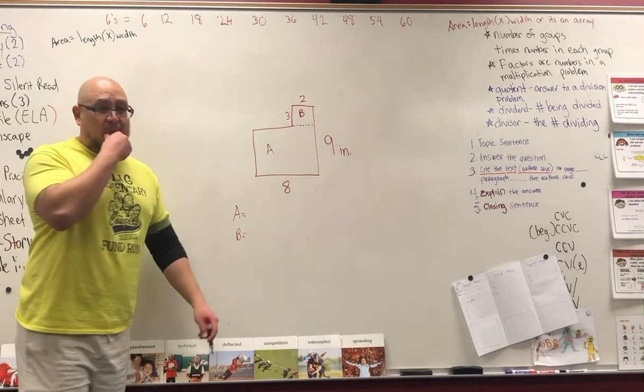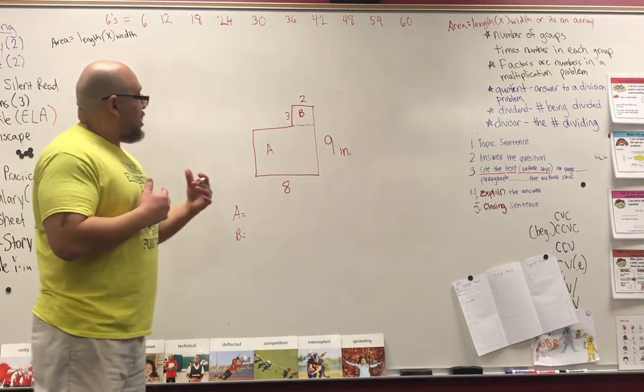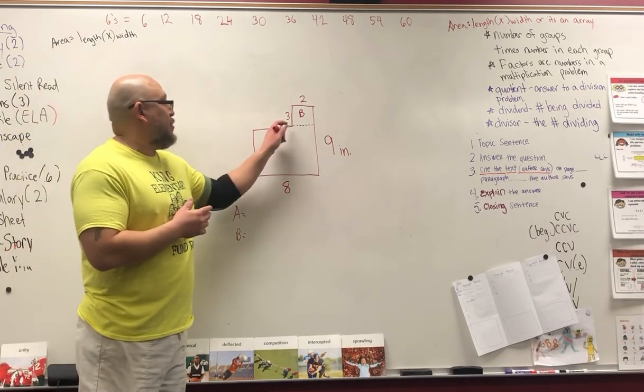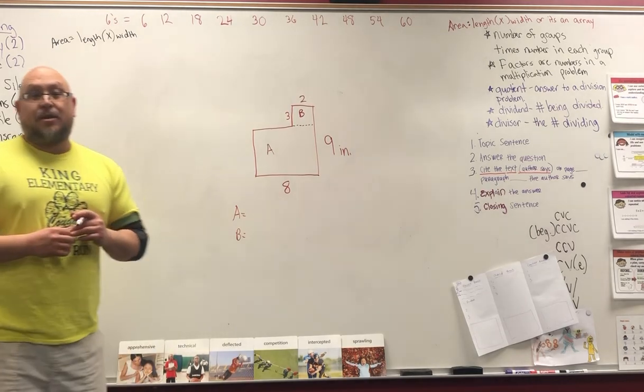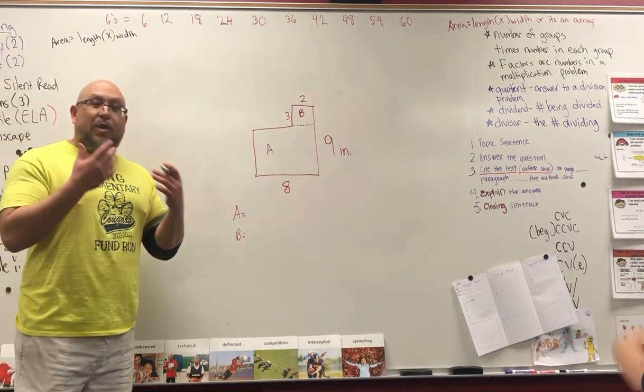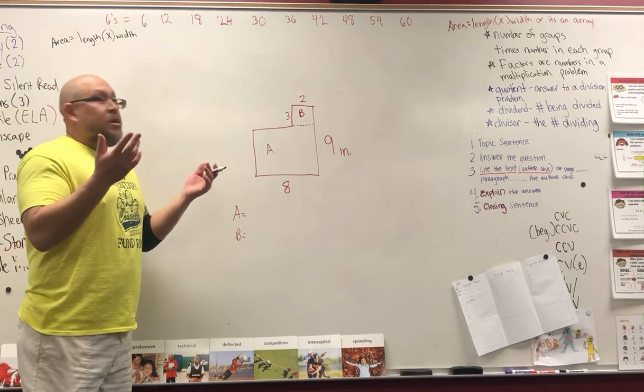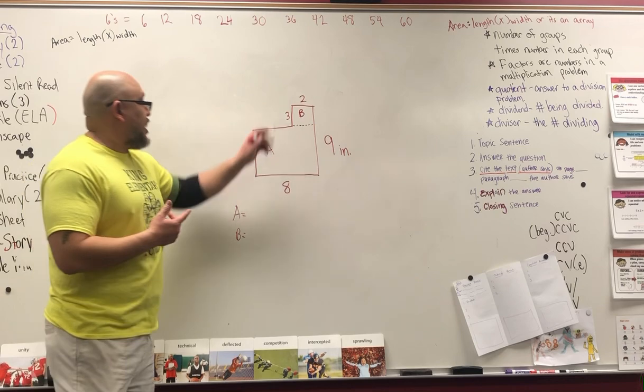Now looking at A, do we know right away what the width times length is? No, because we broke apart this side. But looking at B, do we know right away what the width times length is? Yeah, it's three times two. Look, it's right there - three times two.